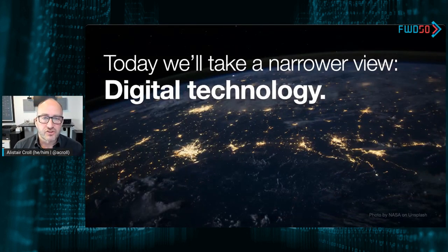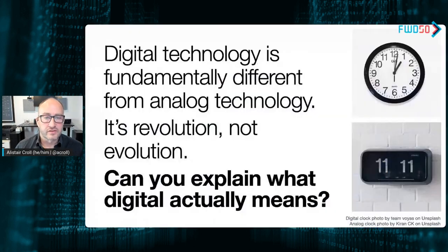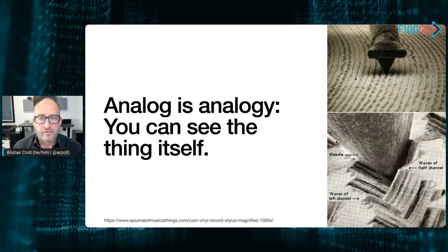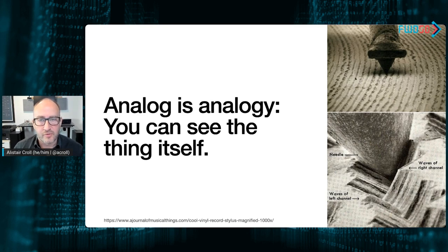Today we're going to take a much narrower view and talk about digital technology specifically. The word analog has the root of the word analogy — an analog thing is analogous to something else. If you think about a record player, vibrations from voice make a needle shake and it leaves a groove in the record. If you put a needle on that record and amplify its vibrations, you get a slightly imperfect copy of that sound back. You can literally see the loudest parts as wobbly lines — you have a physical analog of the vibrations.